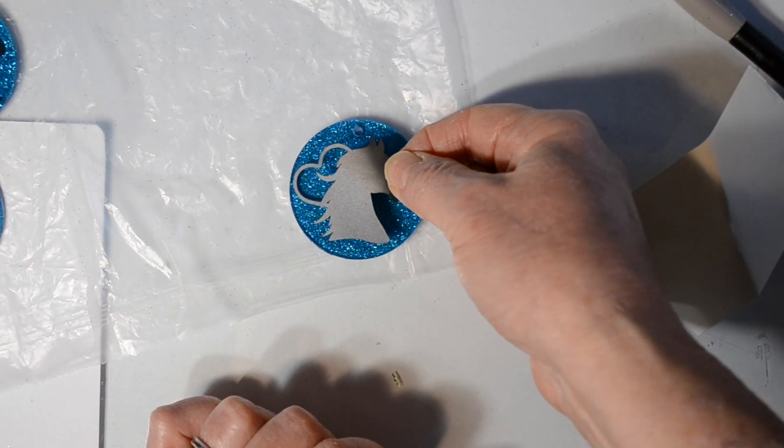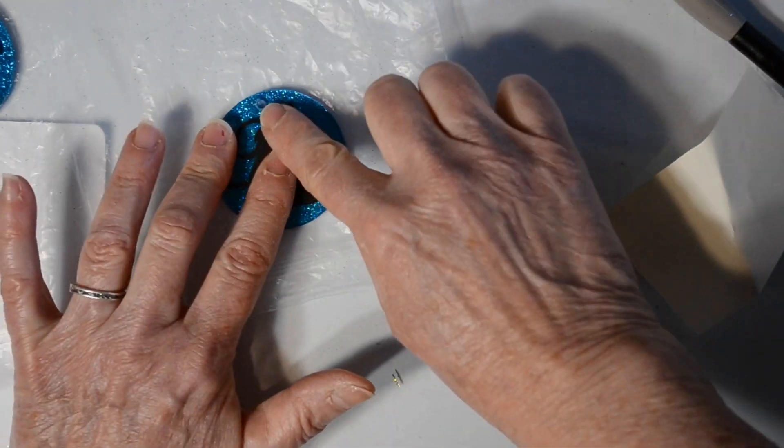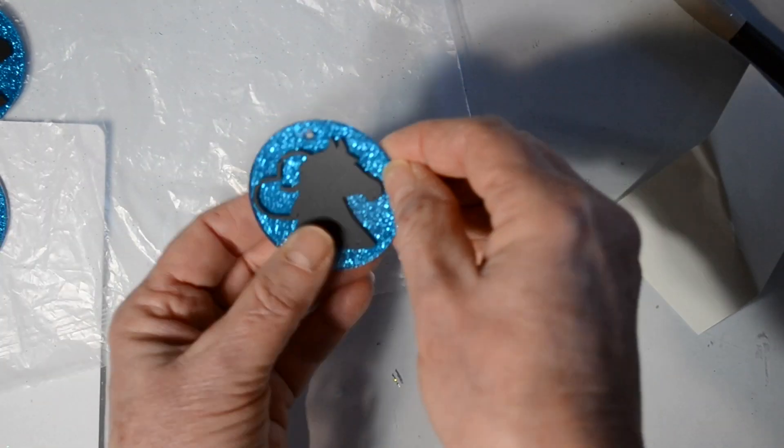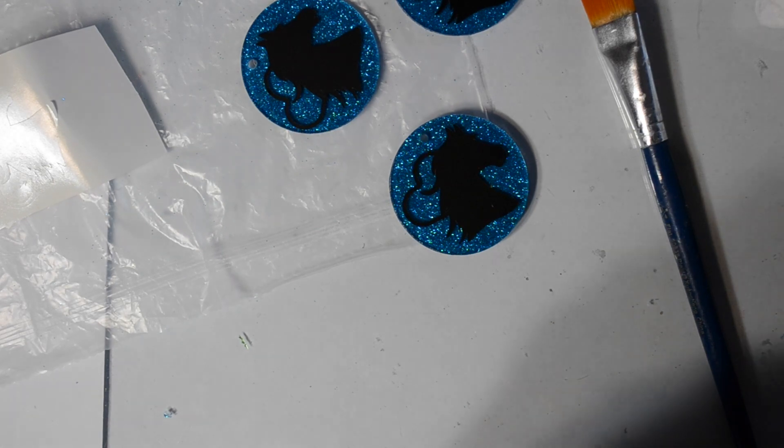A little tip for placing on your vinyl: I place on the thinnest part first of the heart and then rub as I go on the thicker parts of the cut.